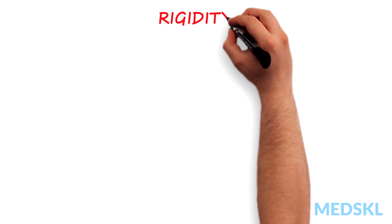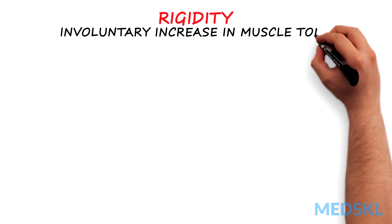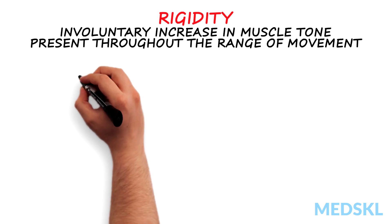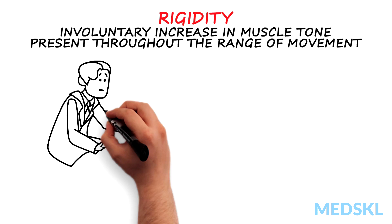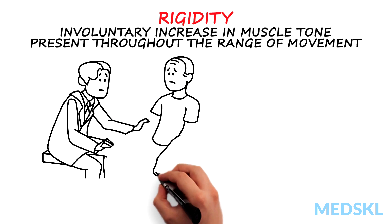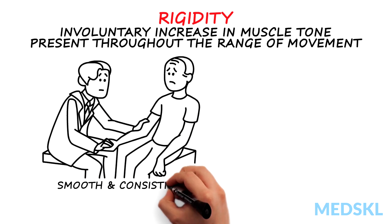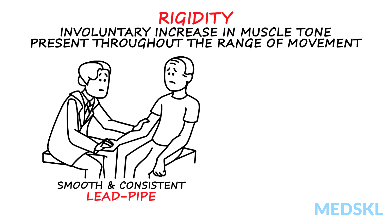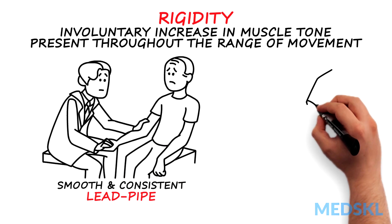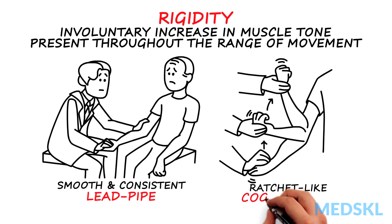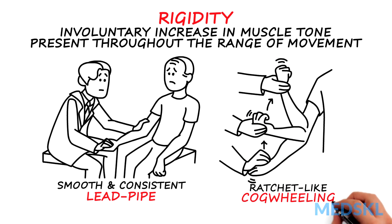Rigidity is an involuntary increase in muscle tone present throughout the range of movement, and can be tested by passively moving the arm, neck, or leg. If rigidity is smooth and consistent throughout, it is called lead pipe rigidity. If, however, there is a ratchet-like quality, it is called cogwheeling, which is thought to be due to rigidity superimposed on an underlying tremor.